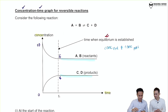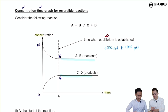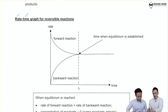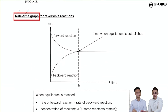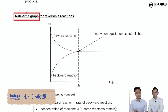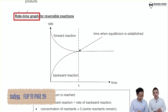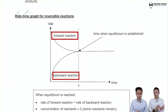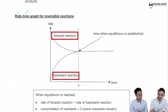Now, could you run us through the rate-time graph? Sure. Comparing the concentration-time graph against the rate-time graph, one key thing you must remind yourself is how the rate of the forward reaction and the rate of the backward reaction will change.